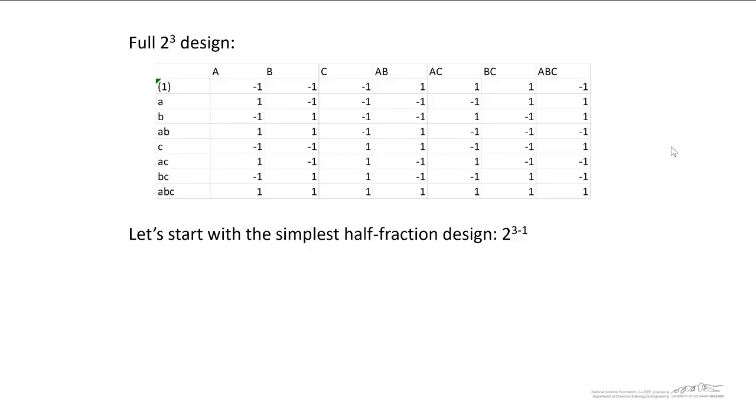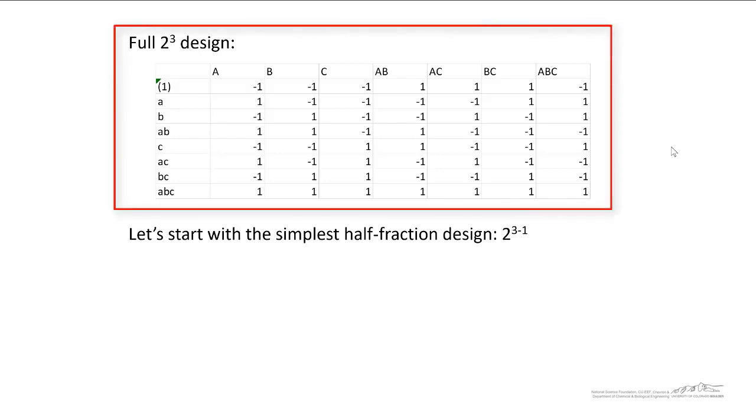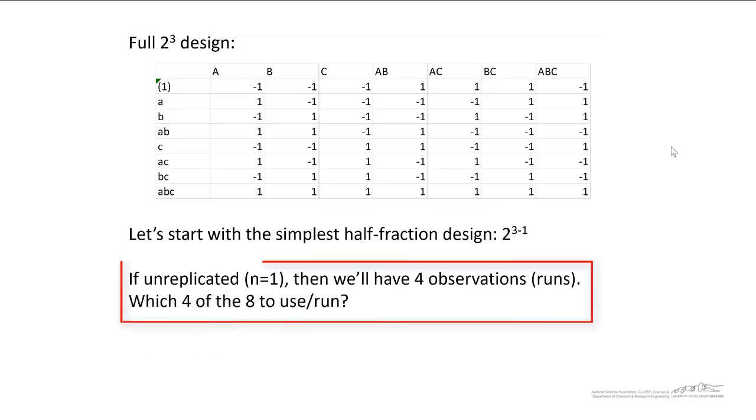So let's start out with the simplest half-fraction design, 2 to the 3 minus 1. Up above here, this is a full 2-cube design, which has 8 possible experiment or treatment combinations. So how do we pare down and make this a half-fractional design? Which of these treatment combinations do we choose to eliminate, and which do we choose to actually collect data for? If unreplicated, if n equals 1, then we'll have 4 observations, and the question becomes which 4 of the 8 to use.